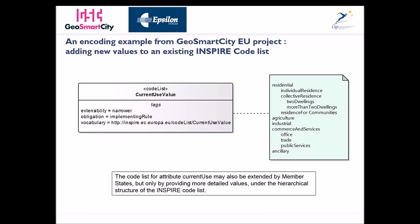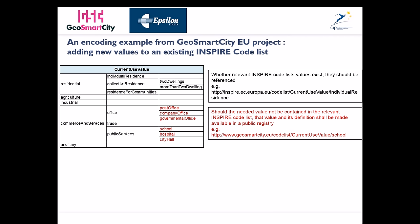In the green box you can see the values in the INSPIRE codelist. We have the parent values: residential, agriculture, industrial, commerce and services, and ancillary, and then nested within we see the child values. In our case we wanted to extend commerce and services. We extended the 'office' parent value with post office, company office, and governmental office child values, and the 'public service' parent value with school, hospital, and city hall child values.